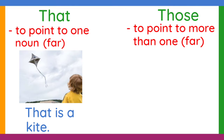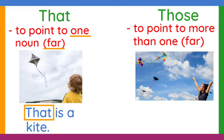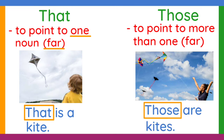Another one: that is a kite. That is used here because the kite is far from the person. How about those? We can say, those are kites, because the person is pointing to more than one kite, and the kites are far from her.